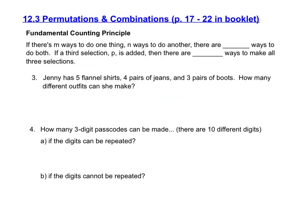The next lesson was 12.3 on permutations and combinations, and this starts with the fundamental counting principle. You already have this exact definition on page 17 in your notebook. The fundamental counting principle tells us that if there are m ways to do one thing and n ways to do another, then there are m times n ways to do both. If a third selection p is added, then there are m times n times p ways to make all three selections, and so on.